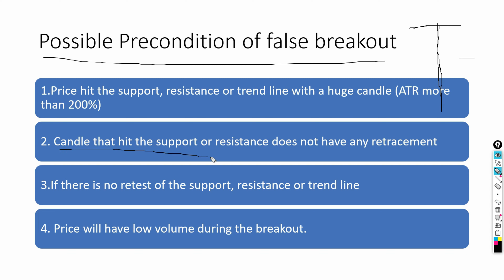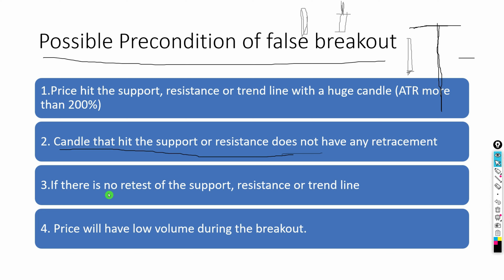The second precondition: the candle that hits the support or resistance does not have any significant retracement. Every candle normally has a wick, which represents retracement. But when a false breakout happens, you will often see that there is no retracement — the candle that breaks the level closes with a big body and almost no wick. That is a high-probability precondition for a false breakout.